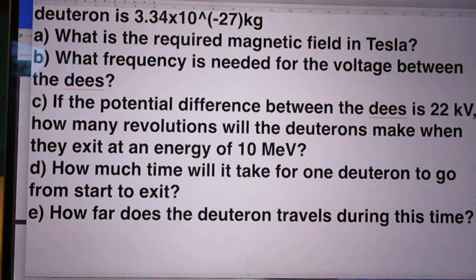Third question. If the potential difference between the dees is 22 kilovolts, how many revolutions will the deuterons make when they exit at an energy of 10 MeV?